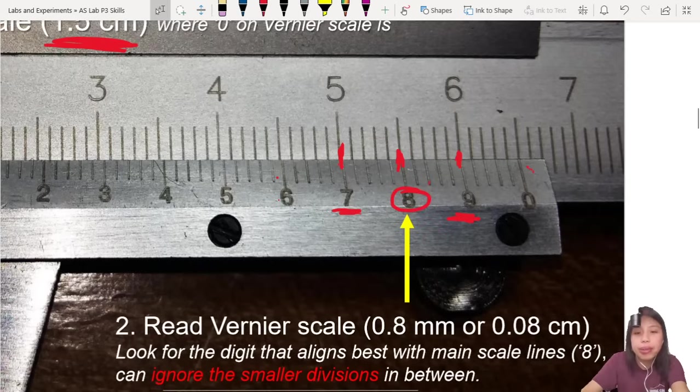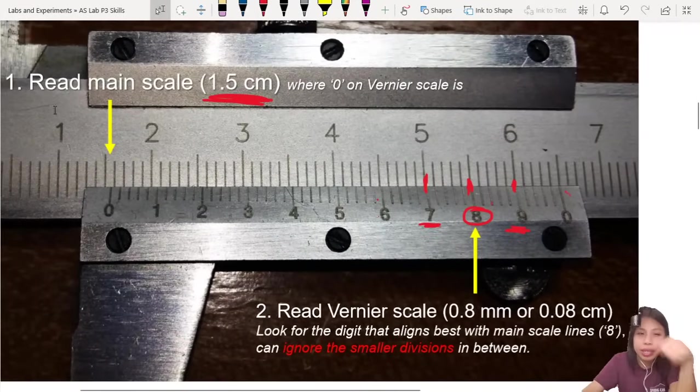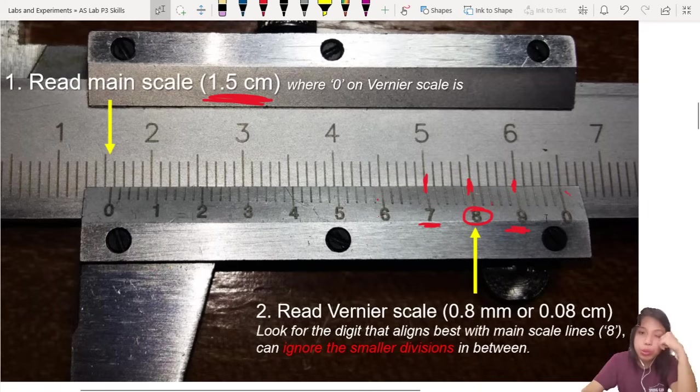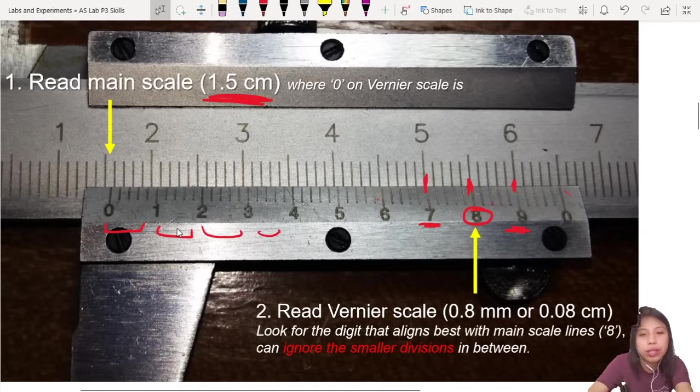So what does this 8 mean? 8 is 0.8 millimeter. Because we have 1 millimeter chopped up into, I guess you could call it 10 sections. 1 section, 2, 3, 4, 5, 6, 7, 8, 9, 10.